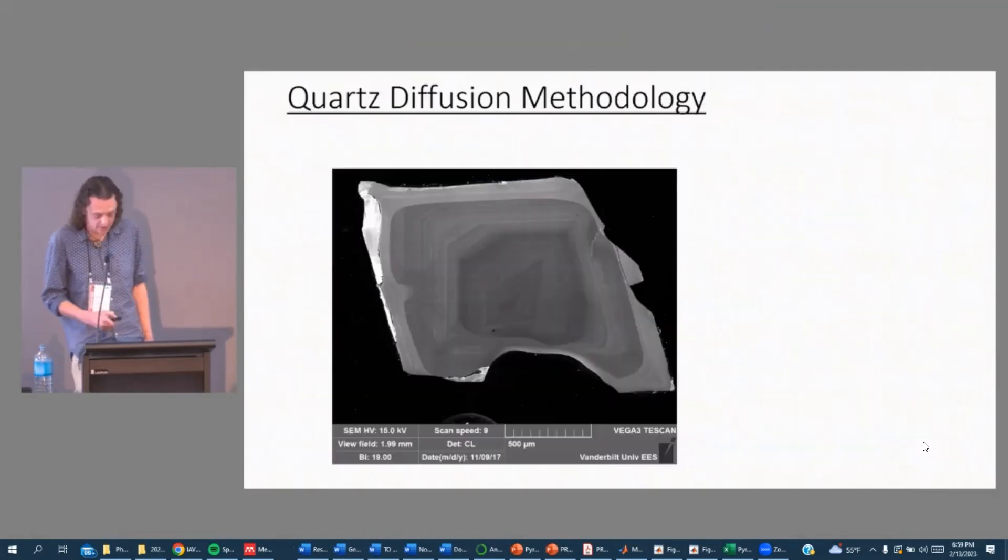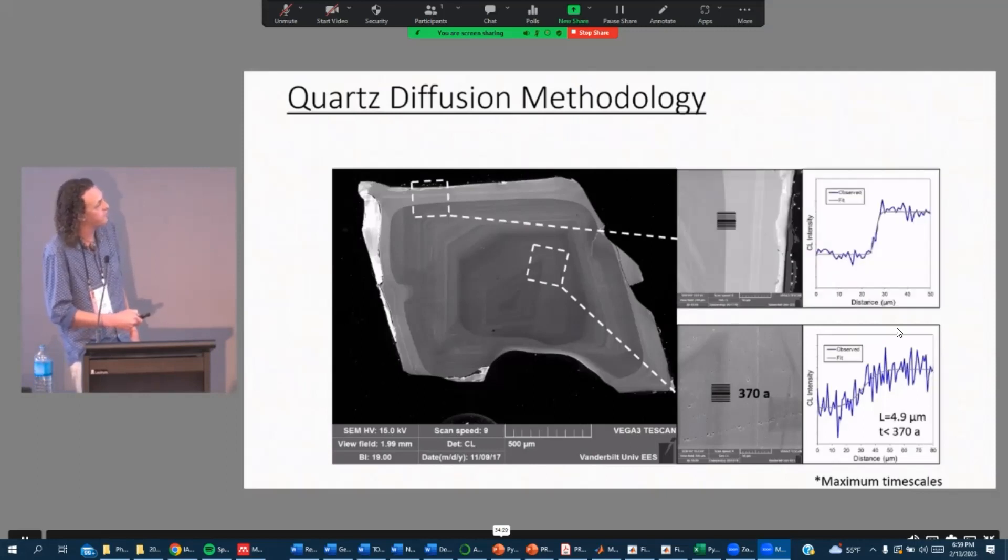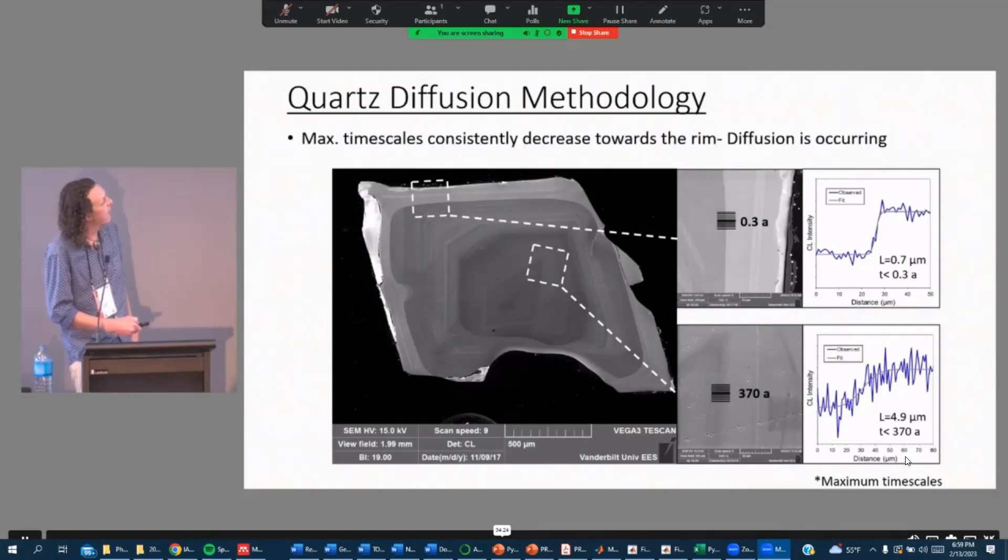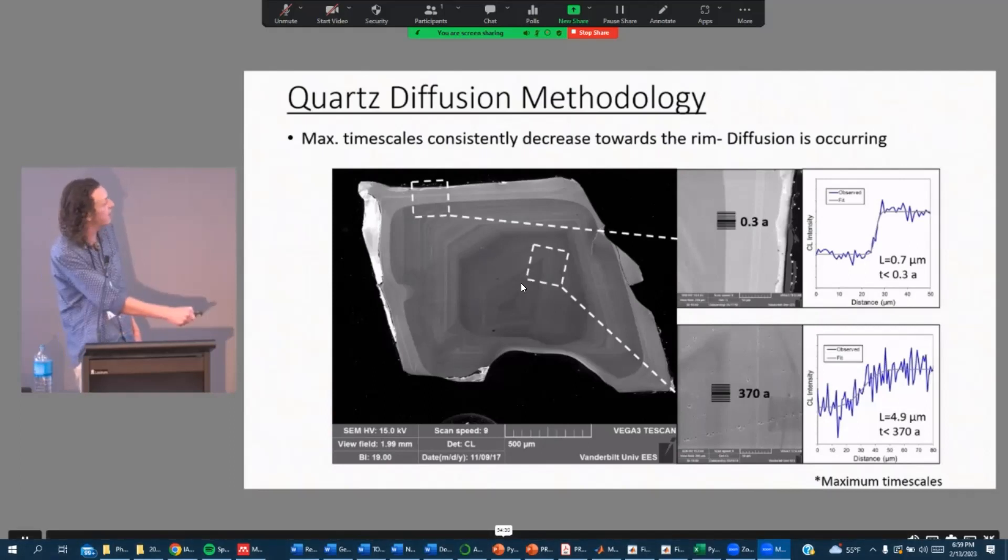So in order to address that, we looked at quartz diffusion using the cathodoluminescence imaging of quartz here. And then we fit a complementary error function to those profiles for cores and for rims. I'm going to be focusing on the cores for this talk. It turns out that the maximum timescales consistently decrease from the core to the rim, indicating that diffusion is in fact occurring.